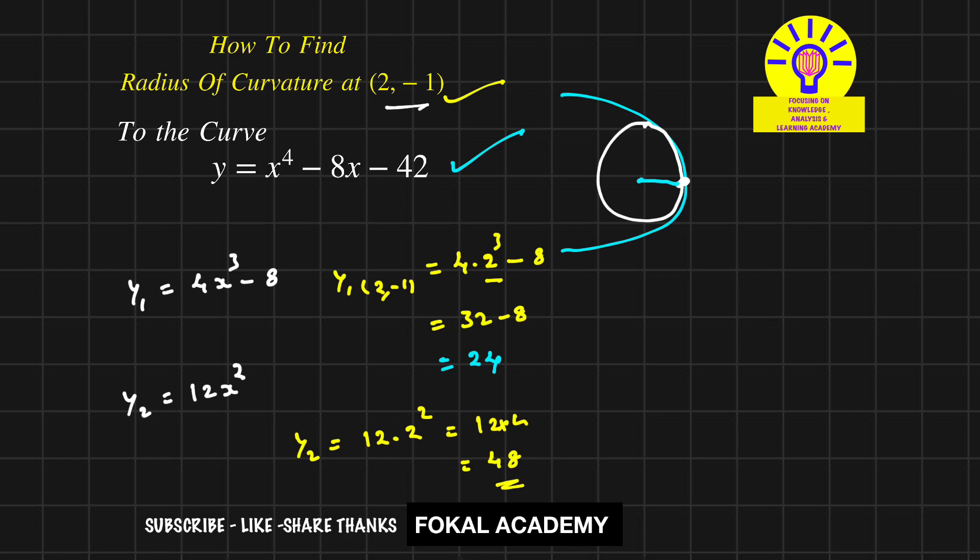Now we have one formula for finding the radius of curvature, that is ρ = (1 + y₁²)^(3/2) / y₂. Here ρ means radius of curvature. For any curve you can find the radius of curvature by applying this formula.